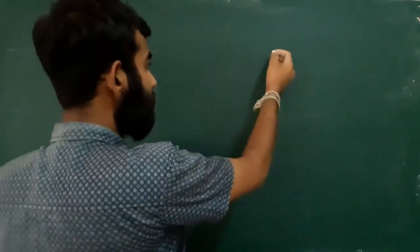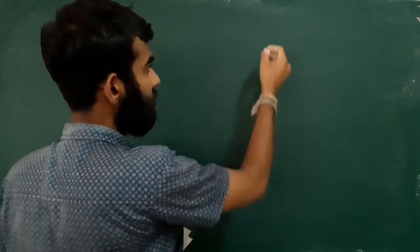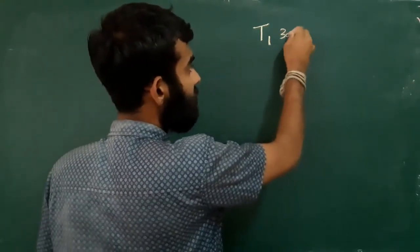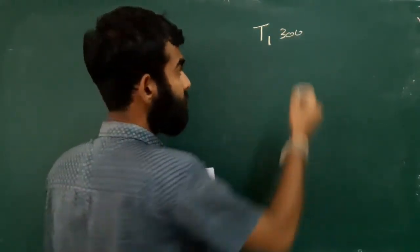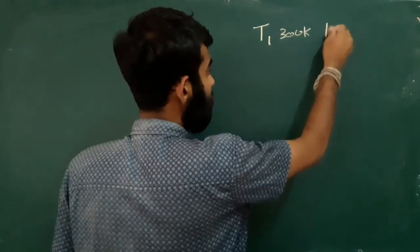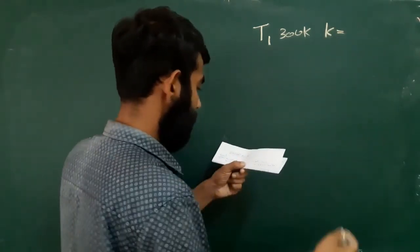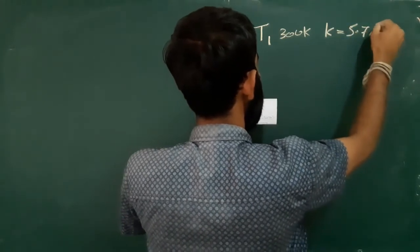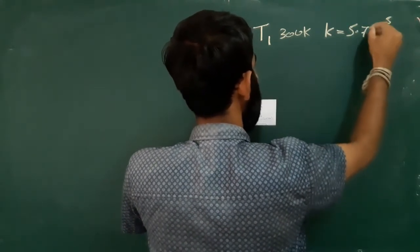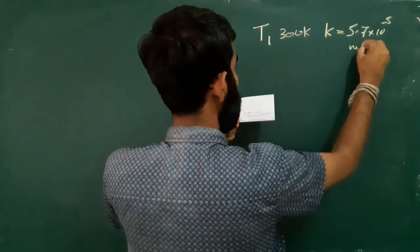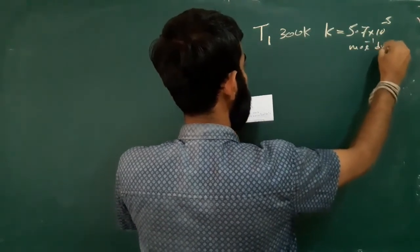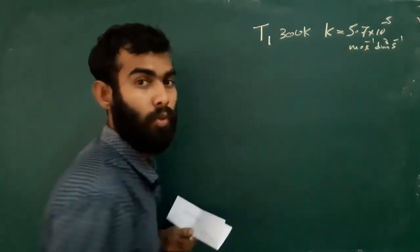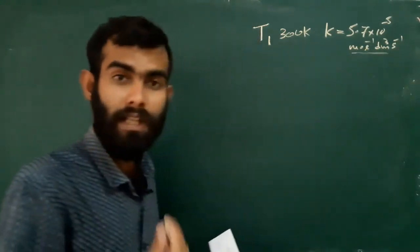In the exam, they will give you two temperatures. At temperature T1, just imagine 300 Kelvin, the rate constant is something. Here I have some data: 5.7 into 10 to the power minus 5. The units are per mole cubic decimeters per second. By observing these units, you can predict the order of the reaction.